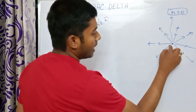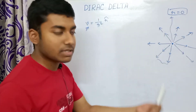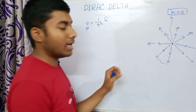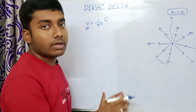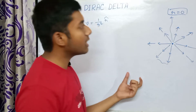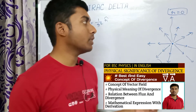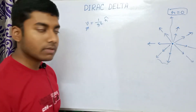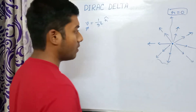This indicates, if you know the physical significance of divergence, that near the point r = 0 — where the charge is situated — there is huge divergence. That point is a point of high divergence. If you don't know the physical meaning of divergence, I have already made a video on it; the link will be in the description box.